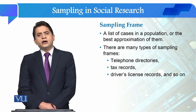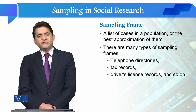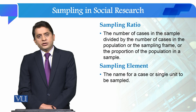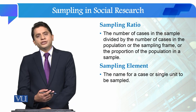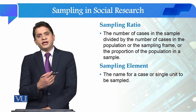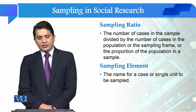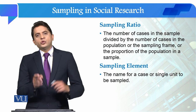If you have an organization or student attendance sheets, you can work on a sampling frame. Sampling ratio is the number of cases in the sample divided by the number of cases in the population or the sampling frame — it is the proportion of the population included in the sample.